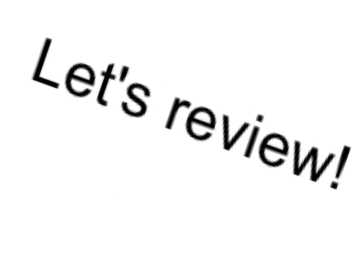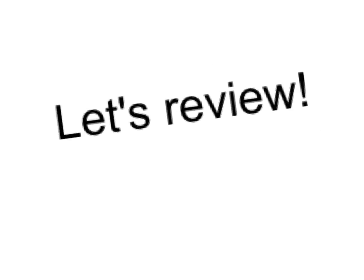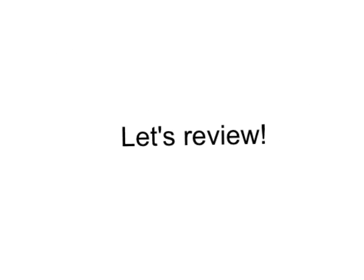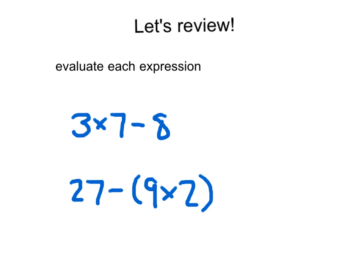Let's review! So we have two different expressions here: 3 times (7 minus 8), and 27 minus 9 times 2. A couple of expressions — one of them involving parentheses. And we have our instructions here where it says evaluate each expression. Please go ahead and take a moment to copy them down and carefully evaluate them down to a single number. Hit pause.